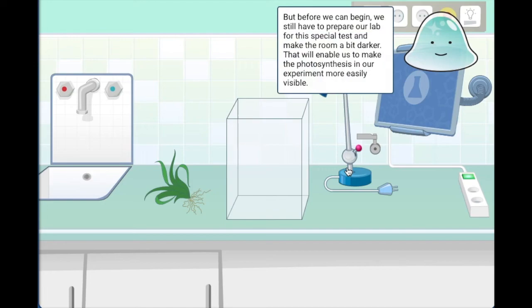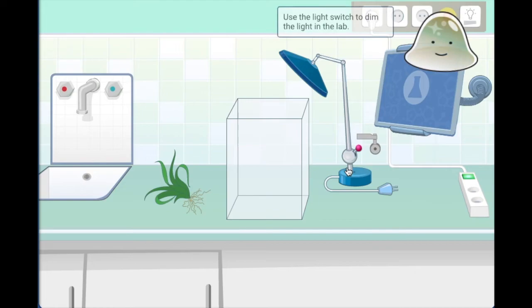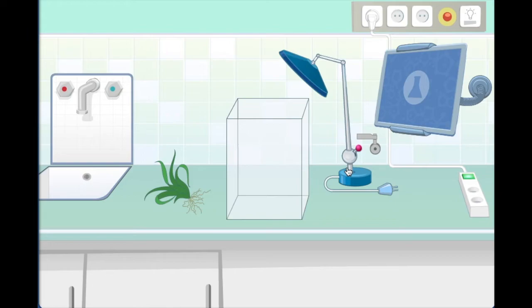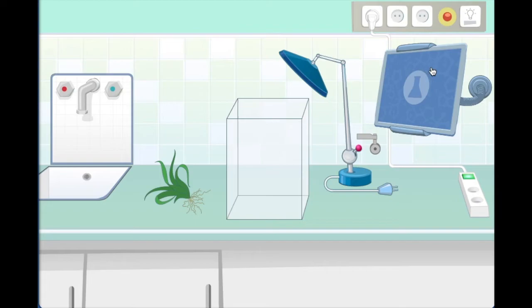But before we can begin, we still have to prepare our lab for this special test and make the room a bit darker. That will enable us to make the photosynthesis in our experiment more easily visible. Use the light switch to dim the light in the lab. Take a look around the lab. Where do you think the light switch for controlling the light in the lab might be located? Now we have to dim the light for the photosynthesis experiment. The light will dim.